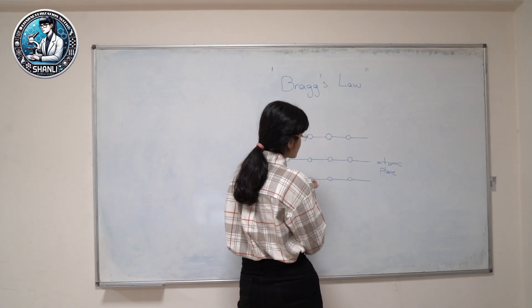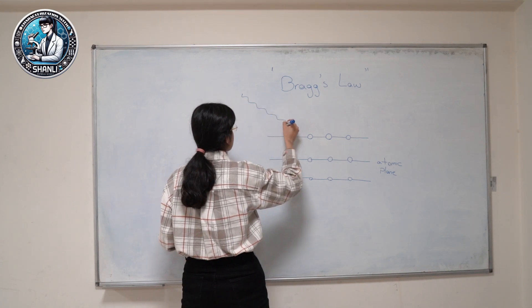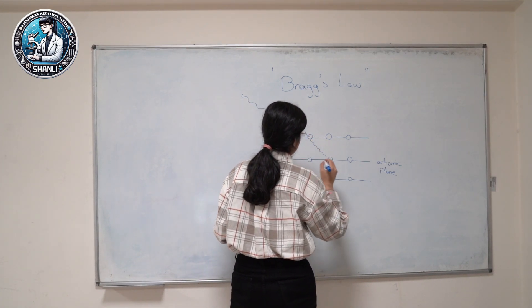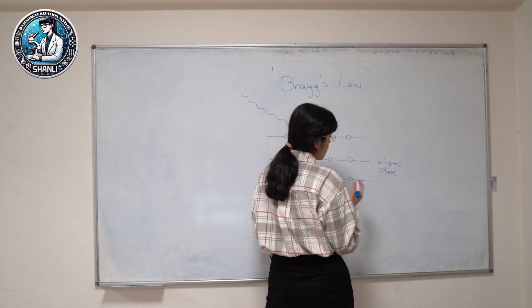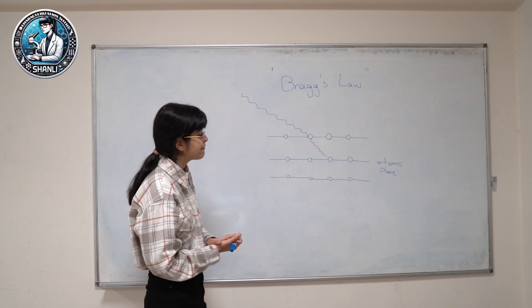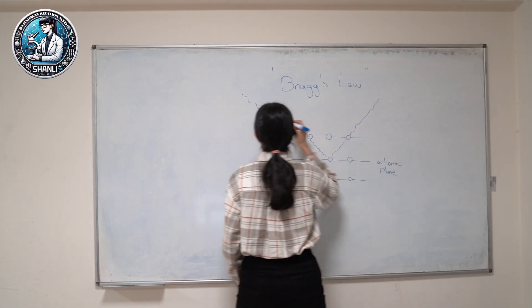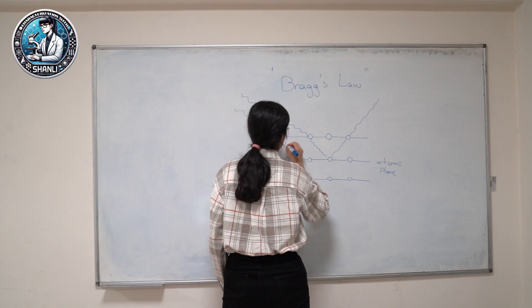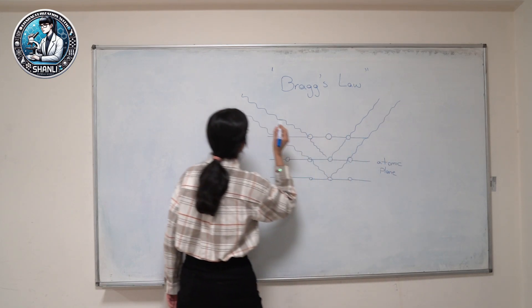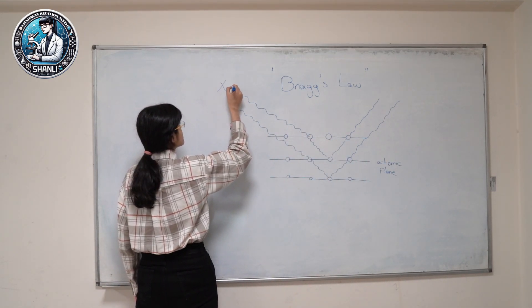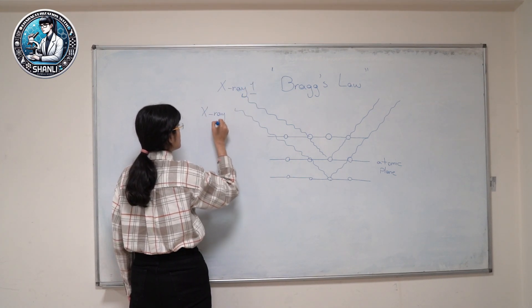Now, in this part, when an X-ray beam interacts with the sample, so this should be our X-ray beams. Let's say X-ray number one, X-ray number two.